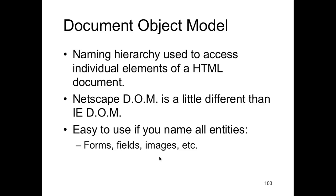Here's a formal definition: the document object model is a naming hierarchy used to access the individual components of the HTML document. Netscape, Firefox, Chrome, and Internet Explorer all have different document object models — they're all a little bit different, which is why nobody likes to use it anymore for everything. You can use it for common things, but if you rely on it for a lot of functionality you'll run into incompatibility issues. On load, you can test what browser is being used and change the code to match the browser for more predictable functionality.